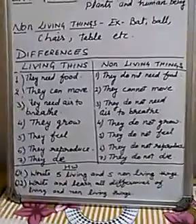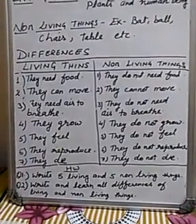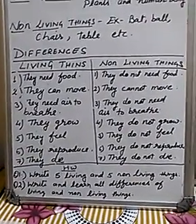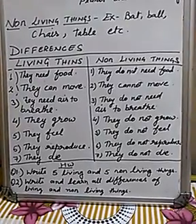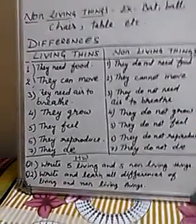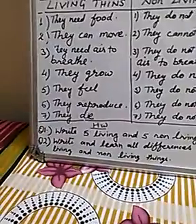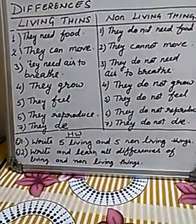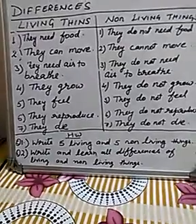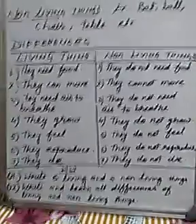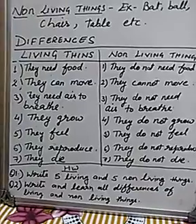So these are the differences between living things and non-living things. From these differences, you will be able to identify which are living and which are non-living things. Now you have to do two questions in your homework: write five living and five non-living things, and write and learn all the differences between living and non-living things. Thank you.